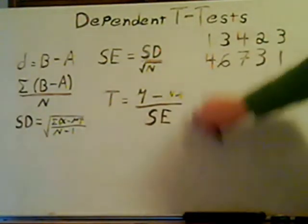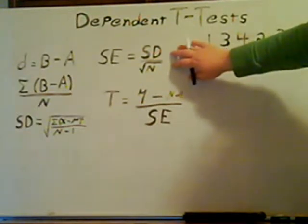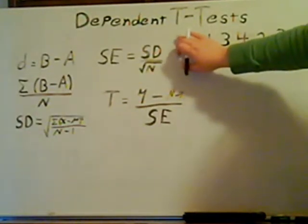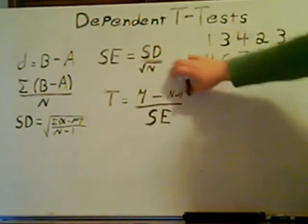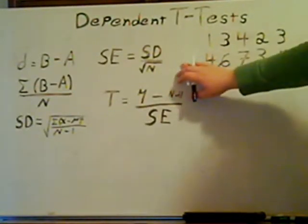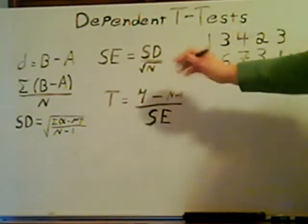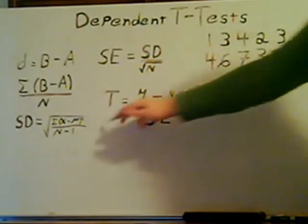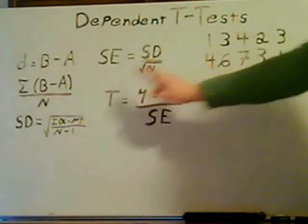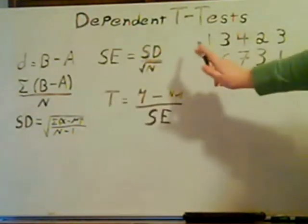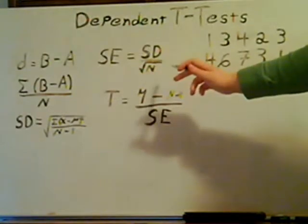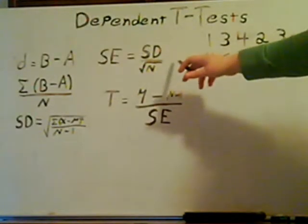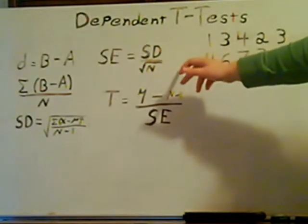Next, we've got to calculate the standard error. The standard error formula is the standard deviation divided by the square root of N. The standard deviation we just got was 2.19, divided by the square root of five, which comes out to 0.98.